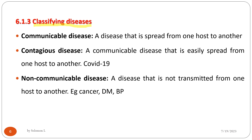Classifying disease: a communicable disease is one that spreads from one host to another. A contagious disease is a communicable disease that is easily spread from one host to another — for example, COVID-19. A non-communicable disease is one that is not transmitted from one host to another, for example cancer, diabetes, and high blood pressure.